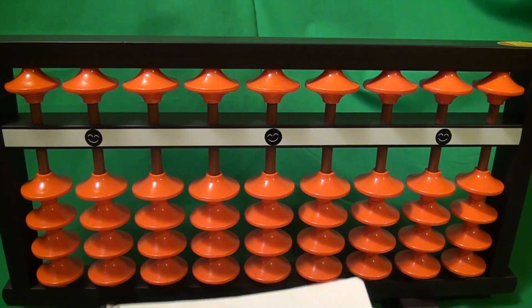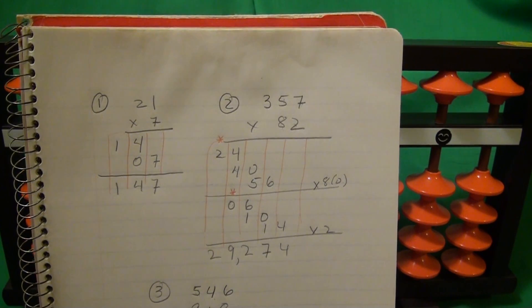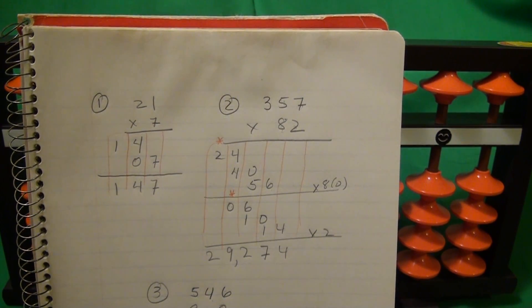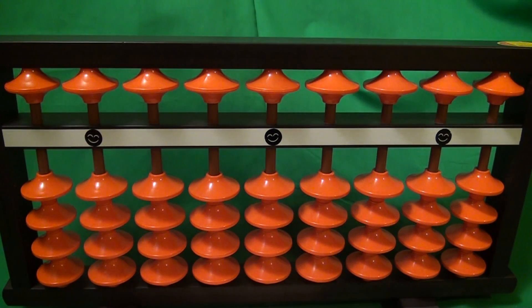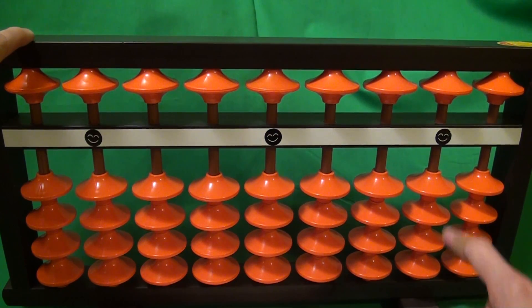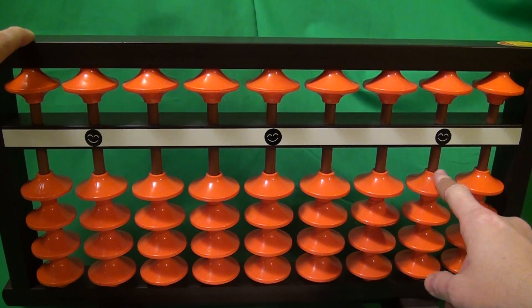Number 2, 357 times 82. 357 times 82, that's a 3 digit times 2 digit. So a total of 5 digits. So we start here and move over 5 digits.